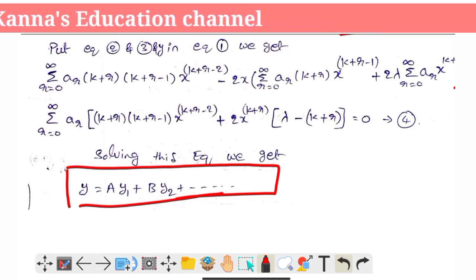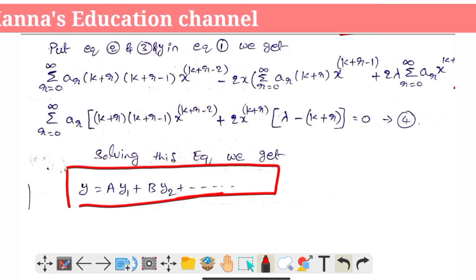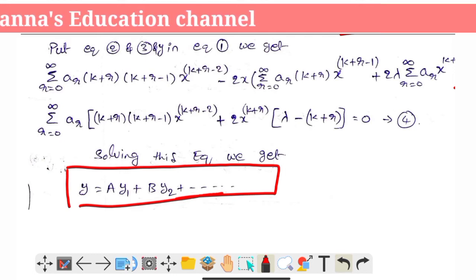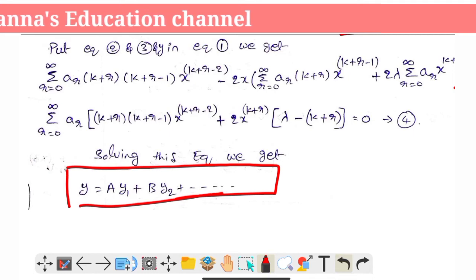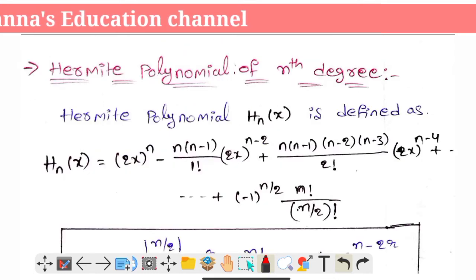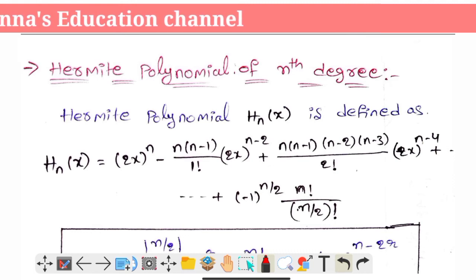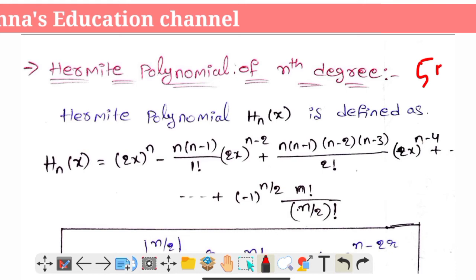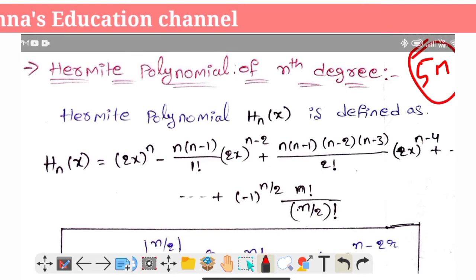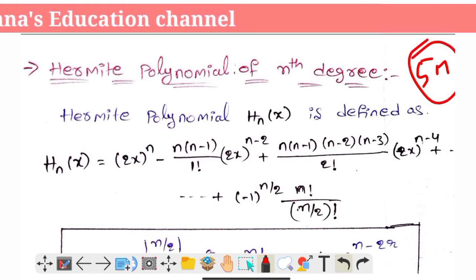We have to double-check the equation. Let's look at the exam — this is worth 5 marks. We'll show you the chance of a 5-mark question. The question is about the Hermite polynomial of nth degree.